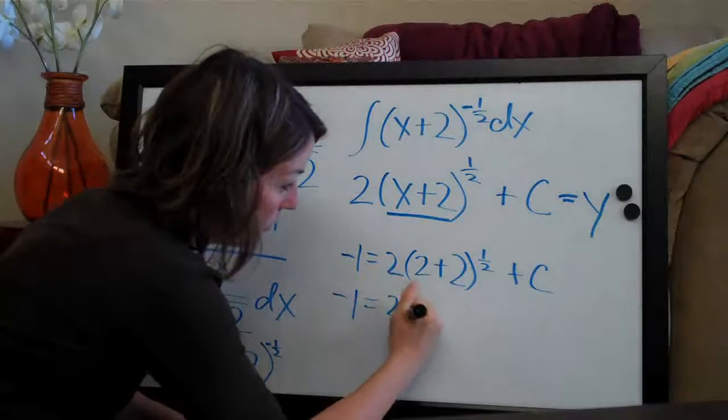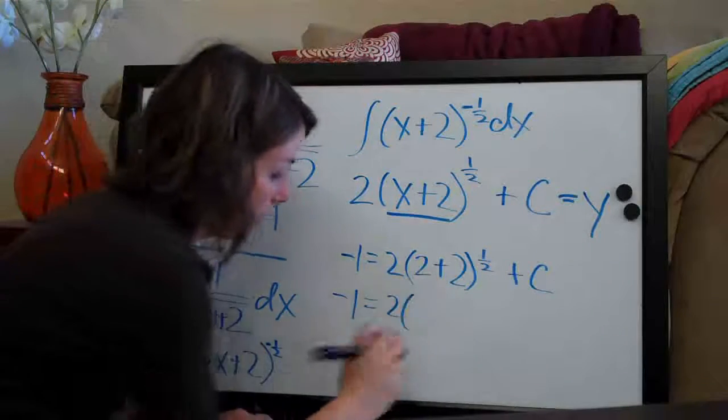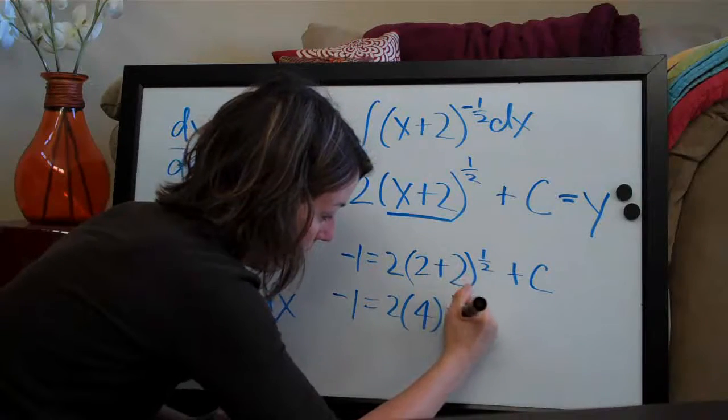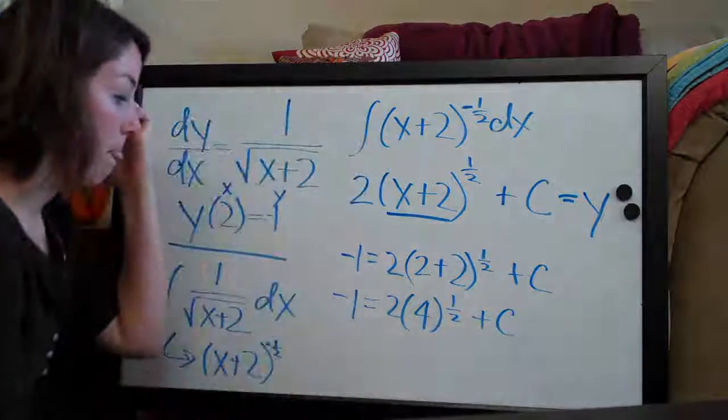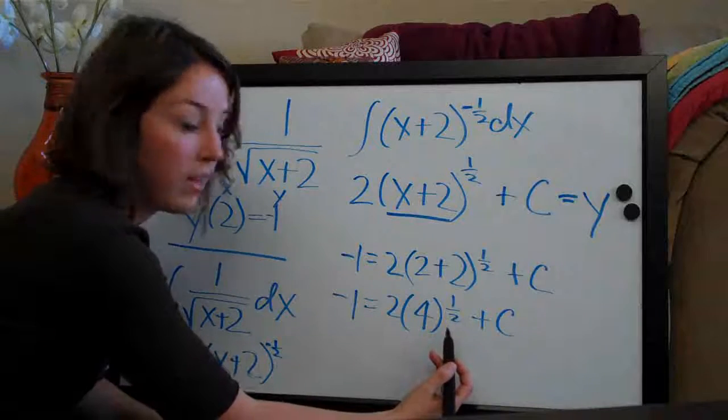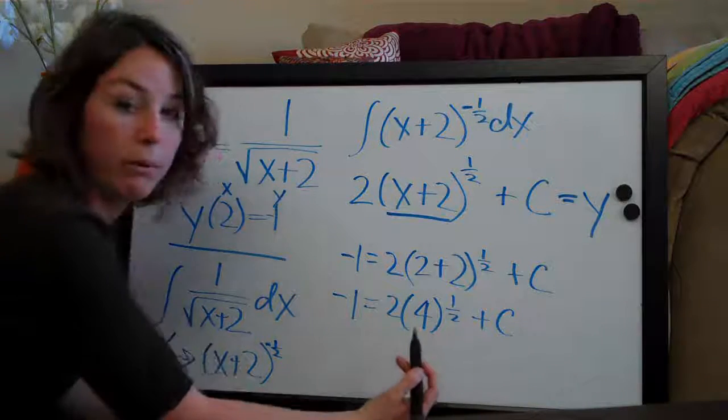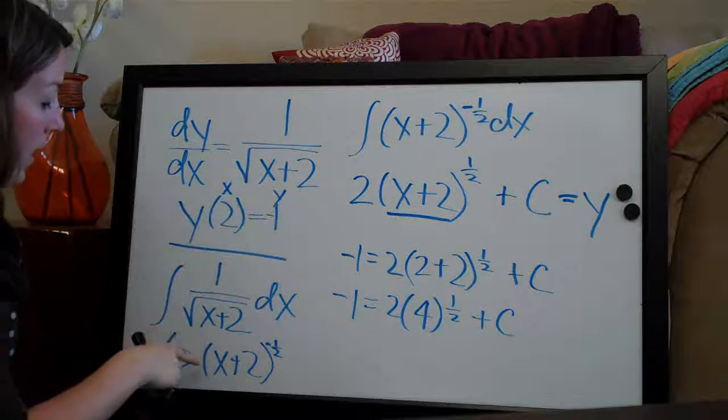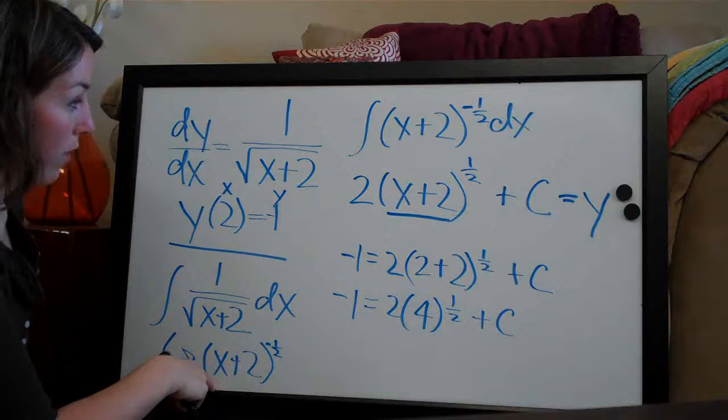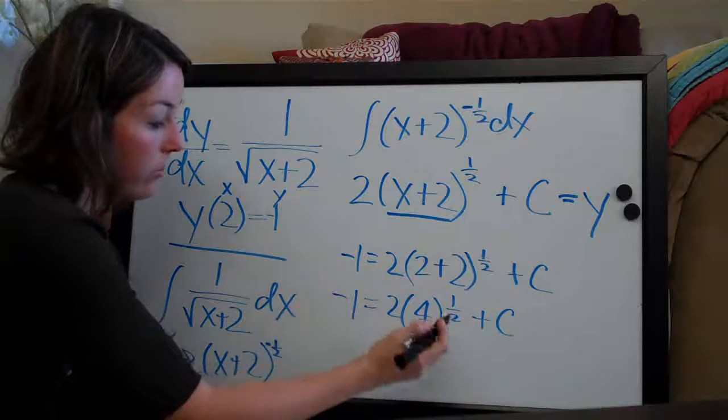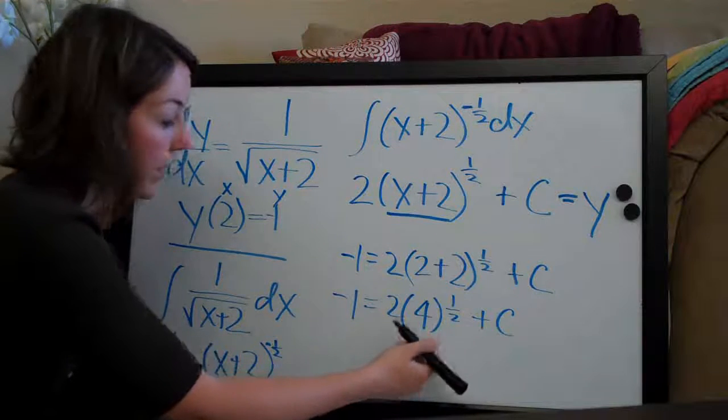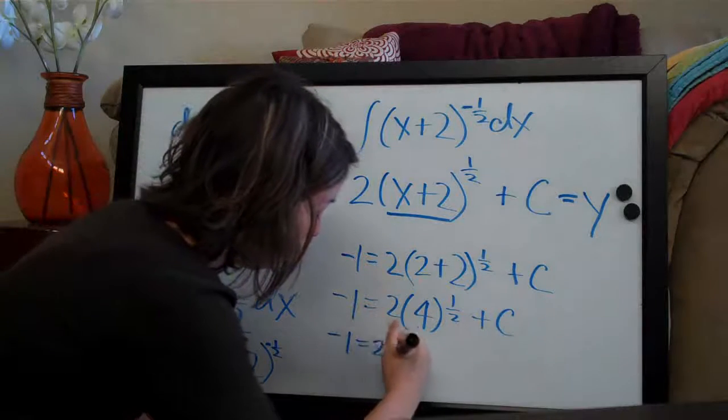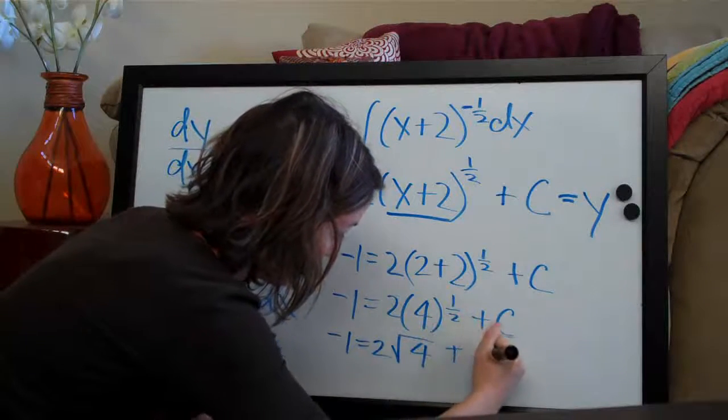Negative 1 equals 2 times, let's do 4 to the 1 half plus c. 4 to the 1 half is the same thing as the square root of 4. Remember we changed this from the square root of x plus 2 to x plus 2 to the 1 half. In the same way we can reverse it, and when we have something to the 1 half we can change it back to the square root. So this is actually negative 1 equals 2 times the square root of 4 plus c.